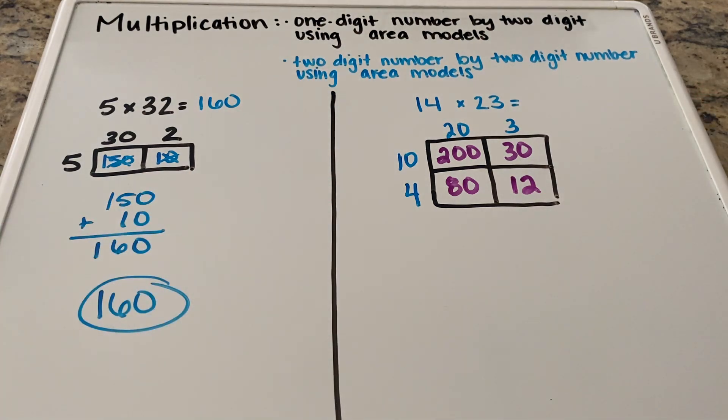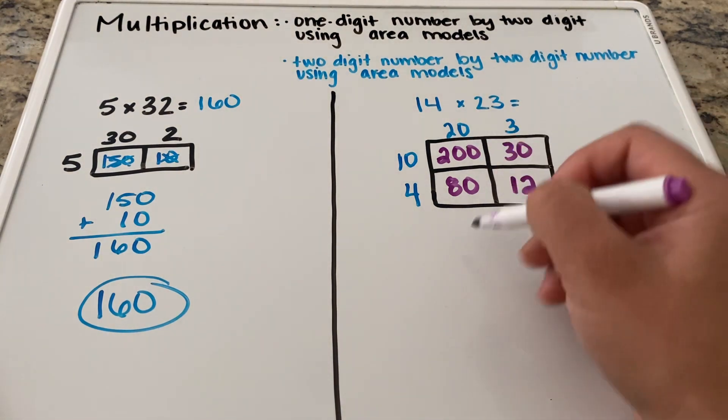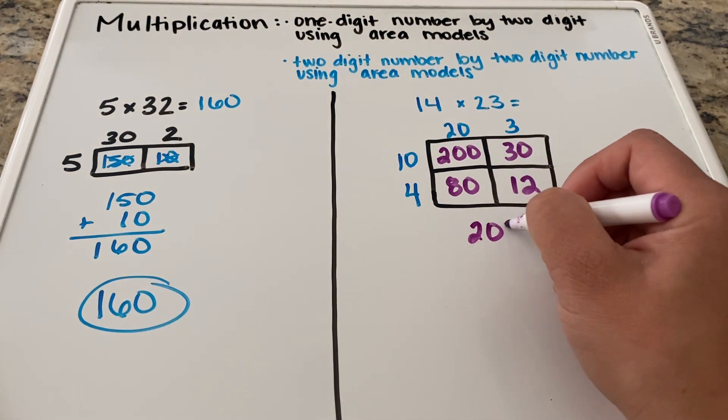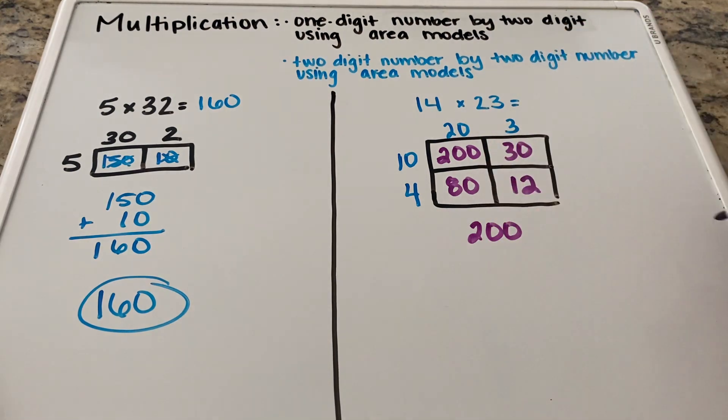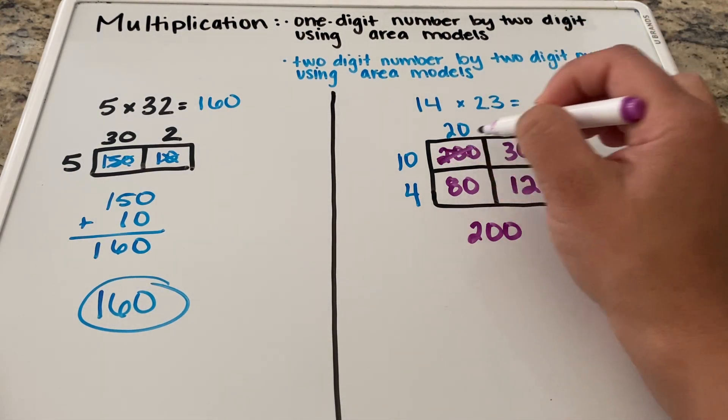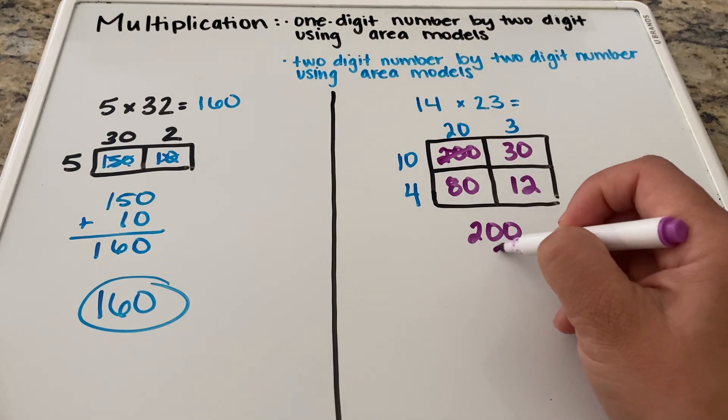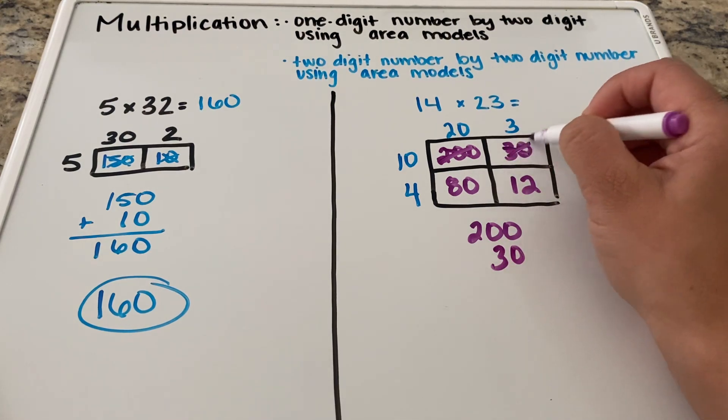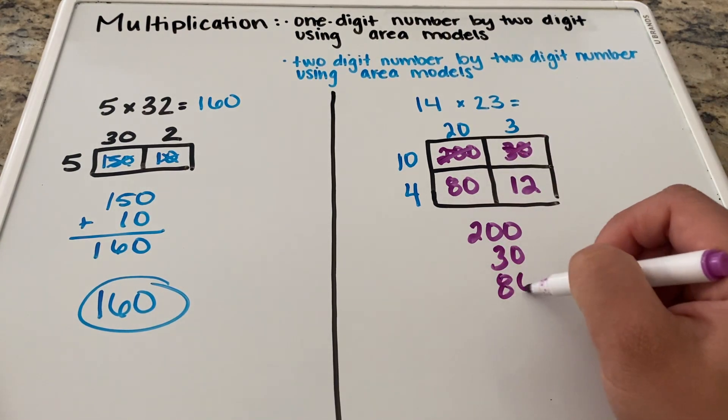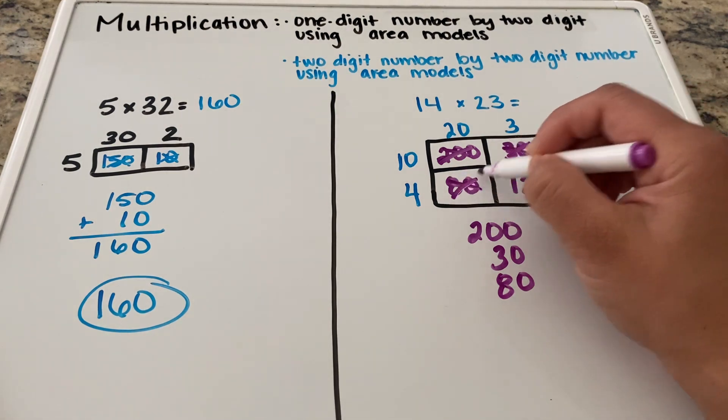So just like we did on our left hand side we are going to take everything out of our boxes. So all of our purple numbers and we're going to bring them straight down. So we have 200. And it's easiest to add straight down as opposed to across. And I'm going to cross them off as I go. So I have 200. I have 30. I have 80. And I have 12.